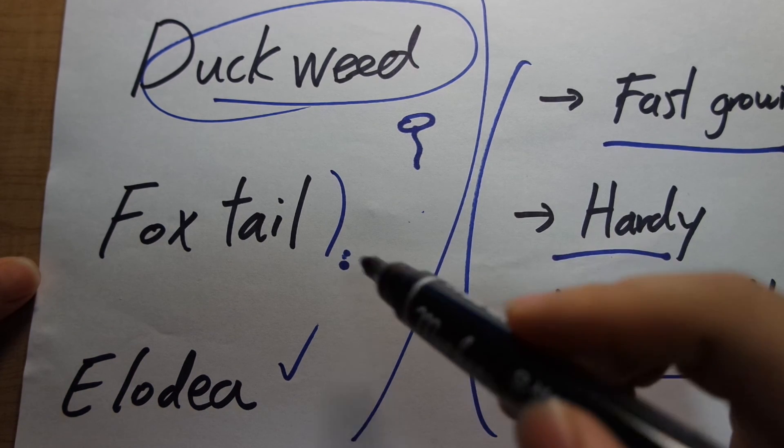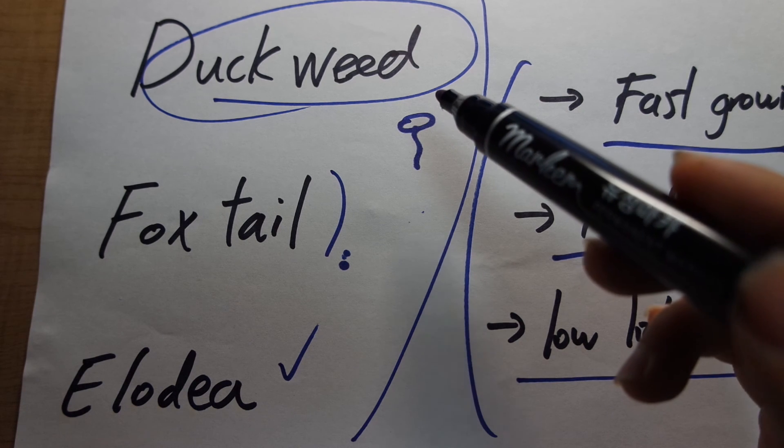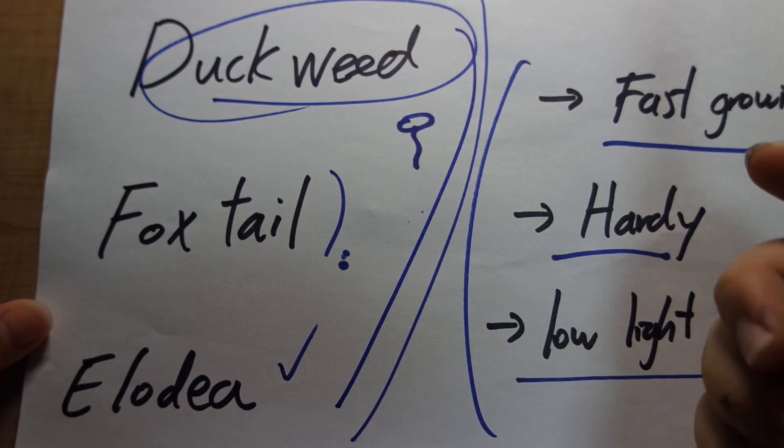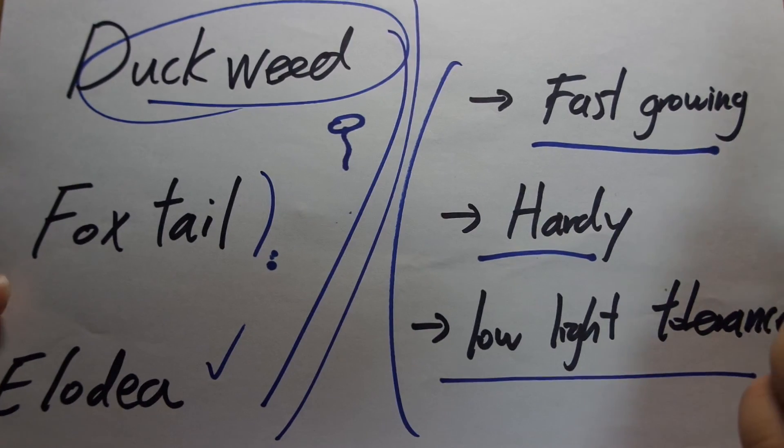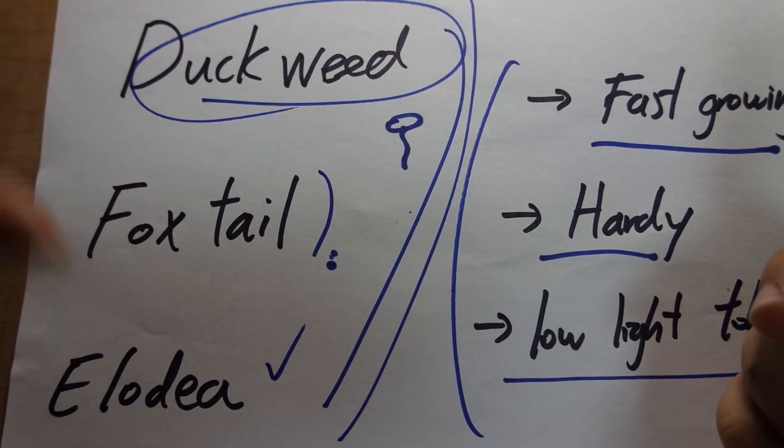actually, I'll feed them these plants occasionally. These are all non-toxic plants that you can feed to your fish or your turtles or whatever, and they'll be fine. So these are just three plants that are non-toxic, fast-growing, hardy, and they're tolerant of low light. And if you don't know what to get, those three plants are there for you.